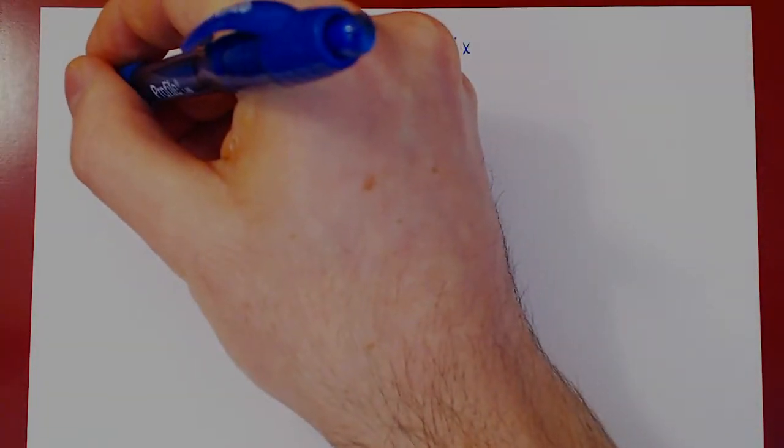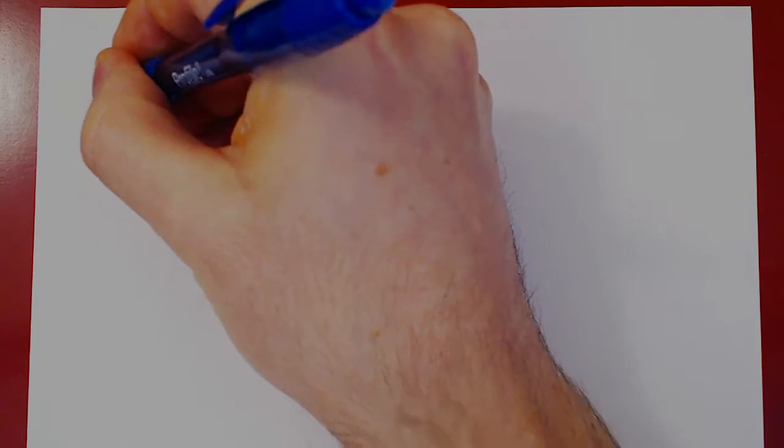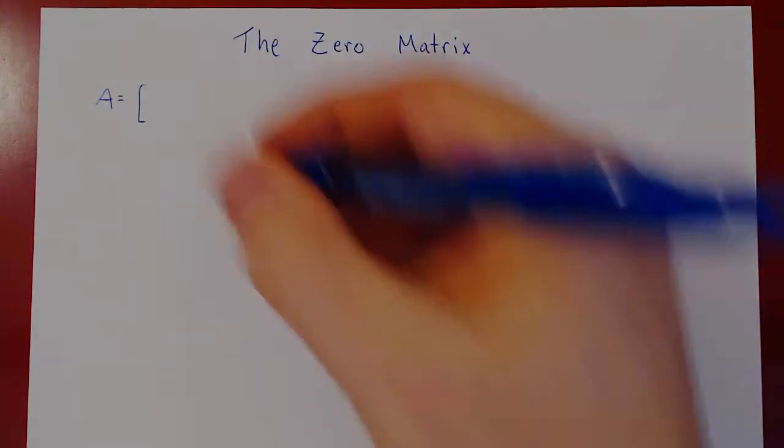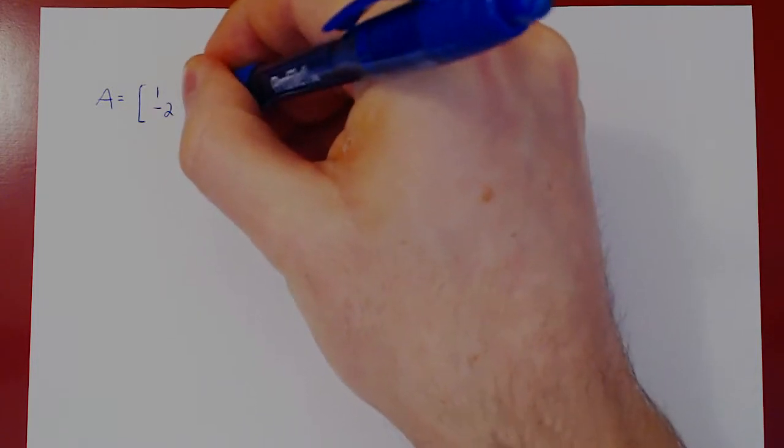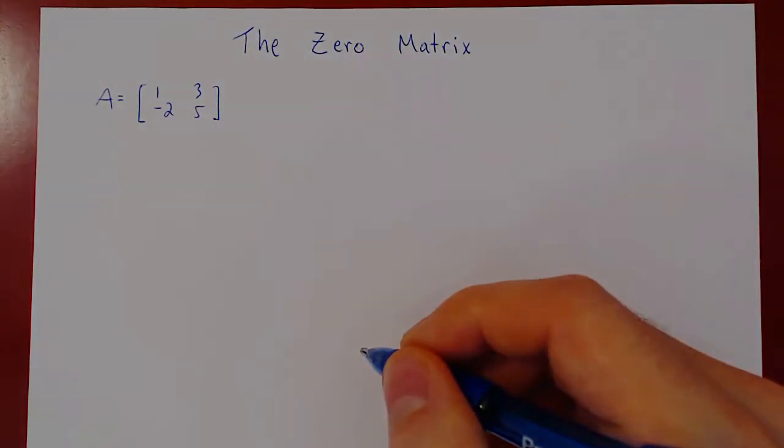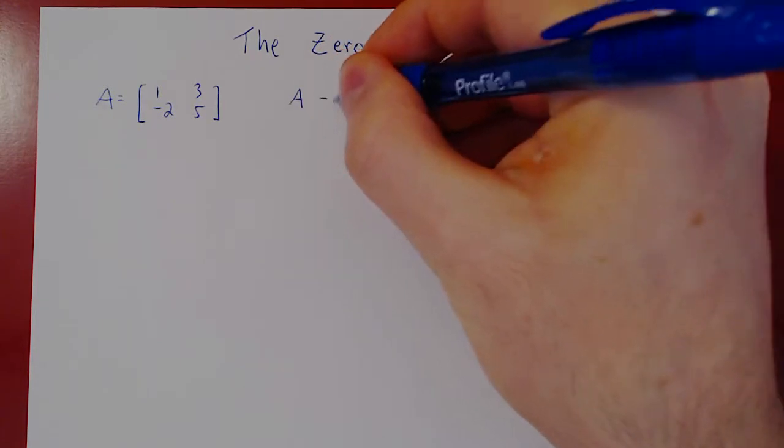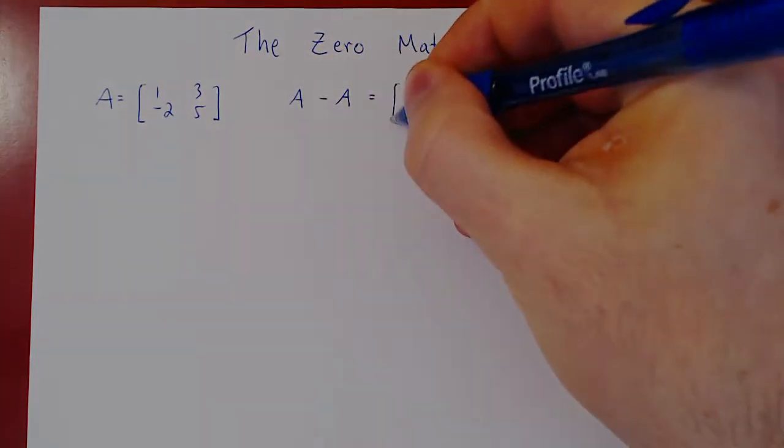Suppose I let matrix A be a 2 by 2 matrix. Let's go with 1, 3, negative 2, 5. And what if I compute A minus A? So I do A minus A.